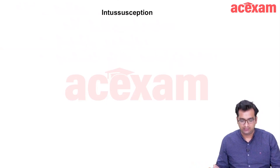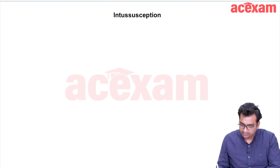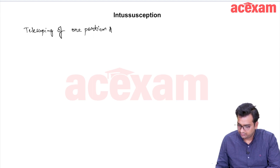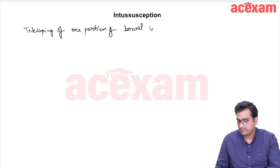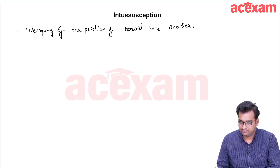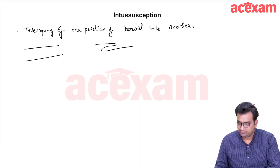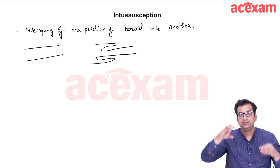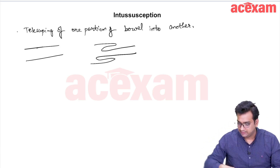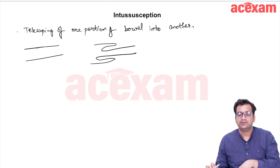The next topic is intussusception. Intussusception is the telescoping of one portion of bowel into another. For example, if this is a bowel and there is telescoping of one portion of bowel into the other, this bowel is going inside this bowel, and this is known as intussusception.